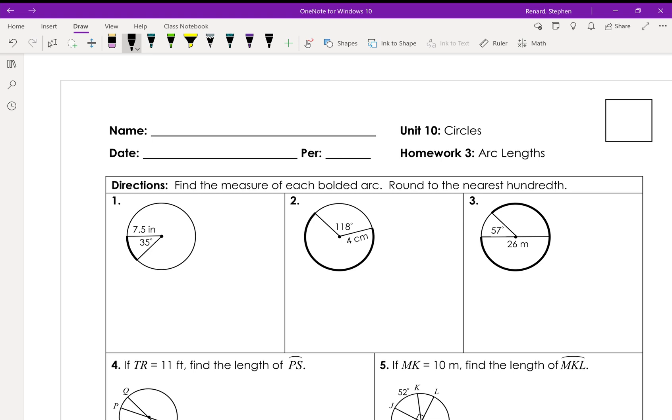Okay, so this is arc lengths for period one and three geometry, and we're finding the measure of each bolded arc. We're going through each problem on this page. Hopefully you use this as a problem-solving helper. If you get stuck, come and watch this. In no way should this be a replacement for you doing the work. You'll need a calculator, so make sure you have that before you get started.